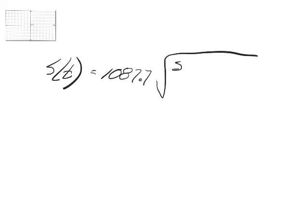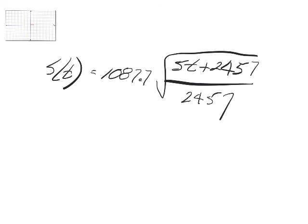Finally, bottom of page 83, we've got applications of functions, the speed of sound in air. They give us a formula, and that formula is a function, speed to time. The formula is 1087.7 times the square root of 5t plus 2457 all over 2457. S is feet per second. Find the speed of sound in air when the temperature is 0, 32, 70, and negative 10.